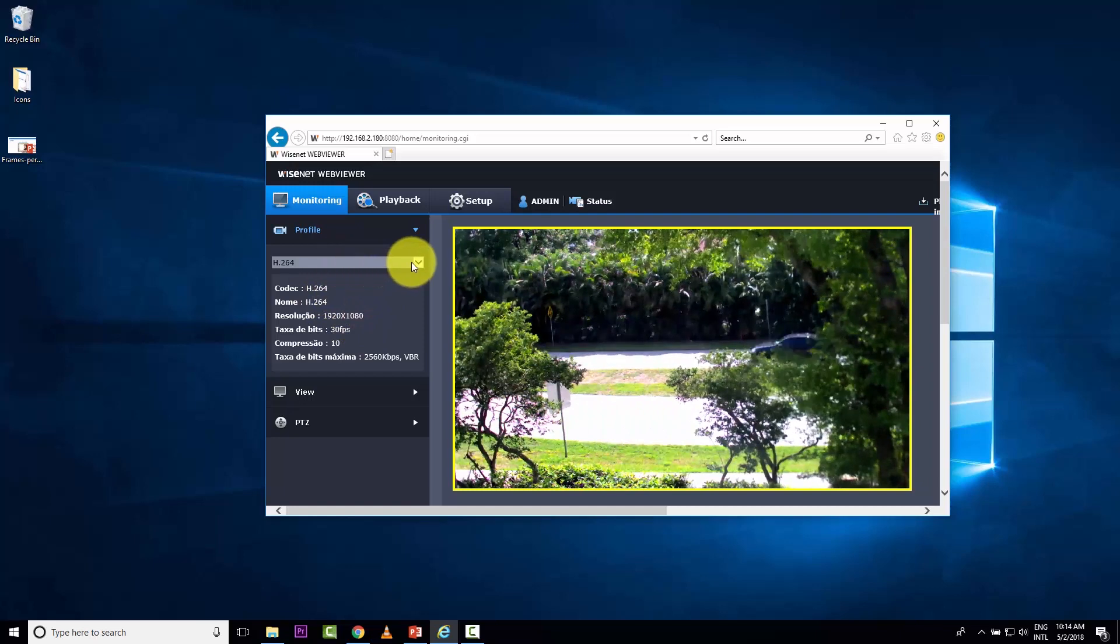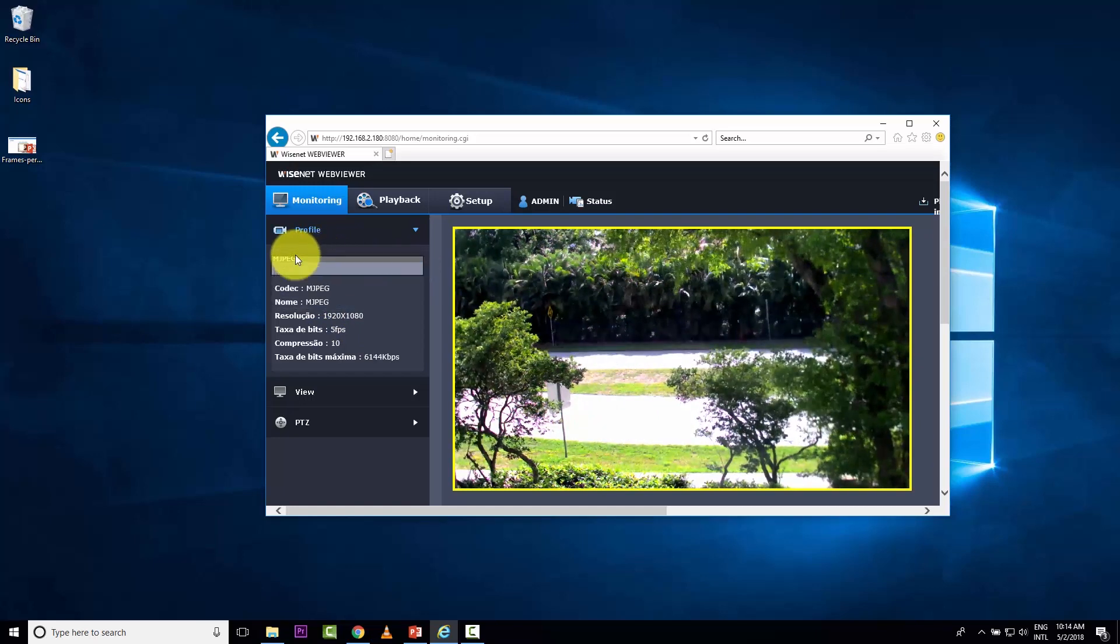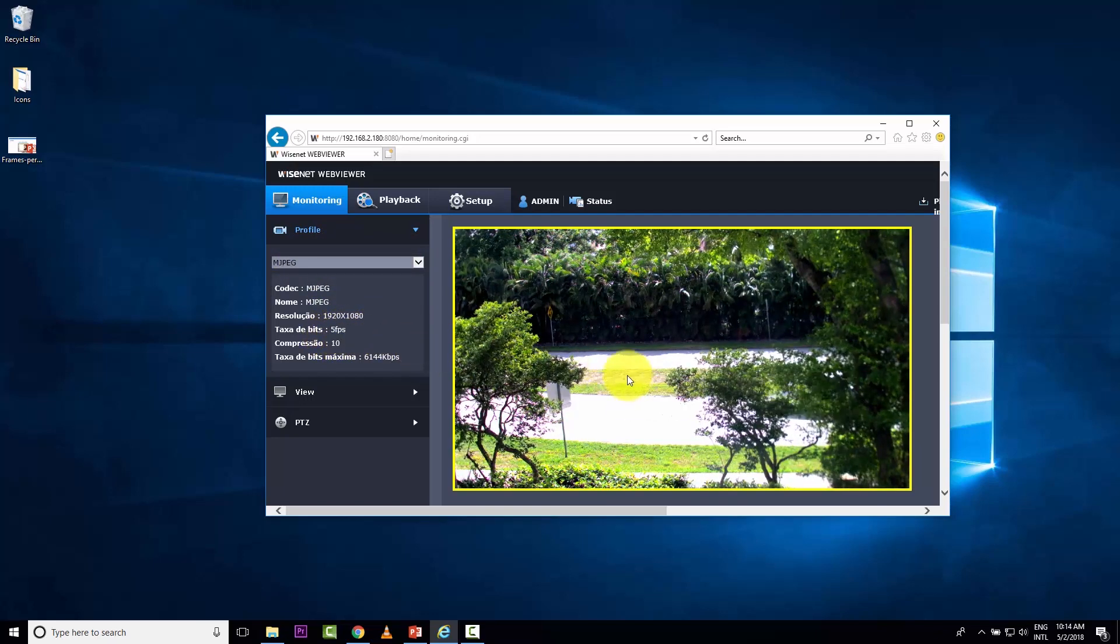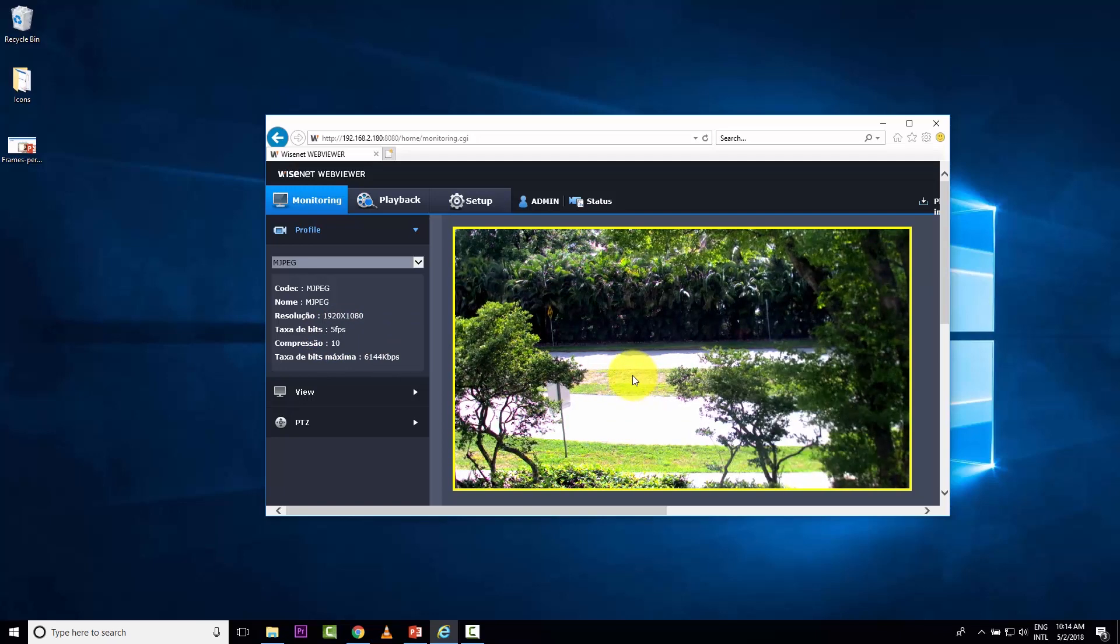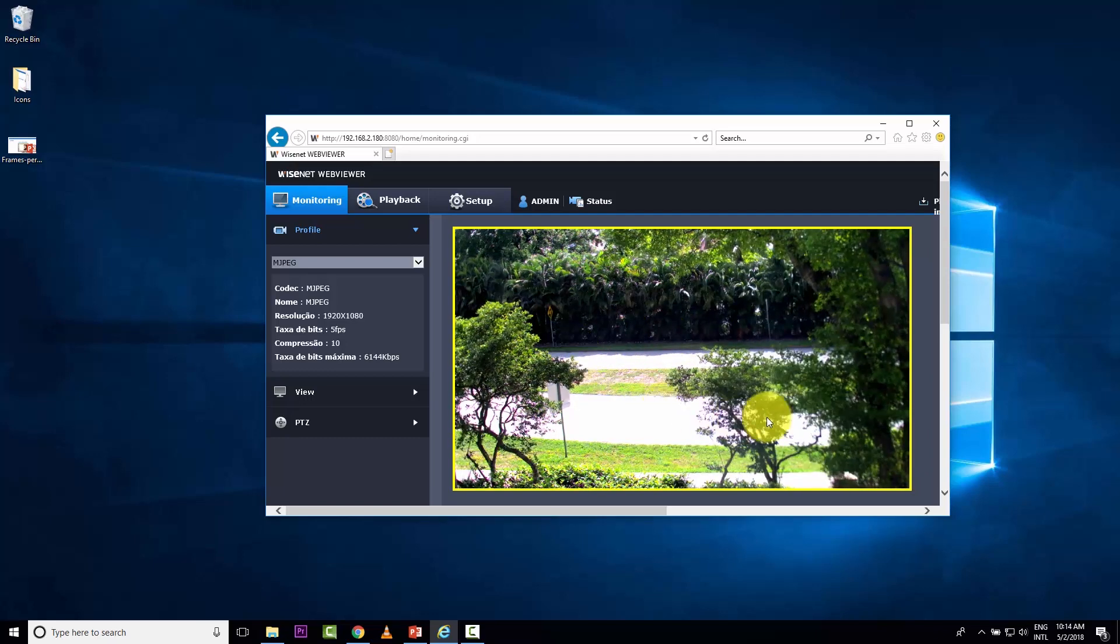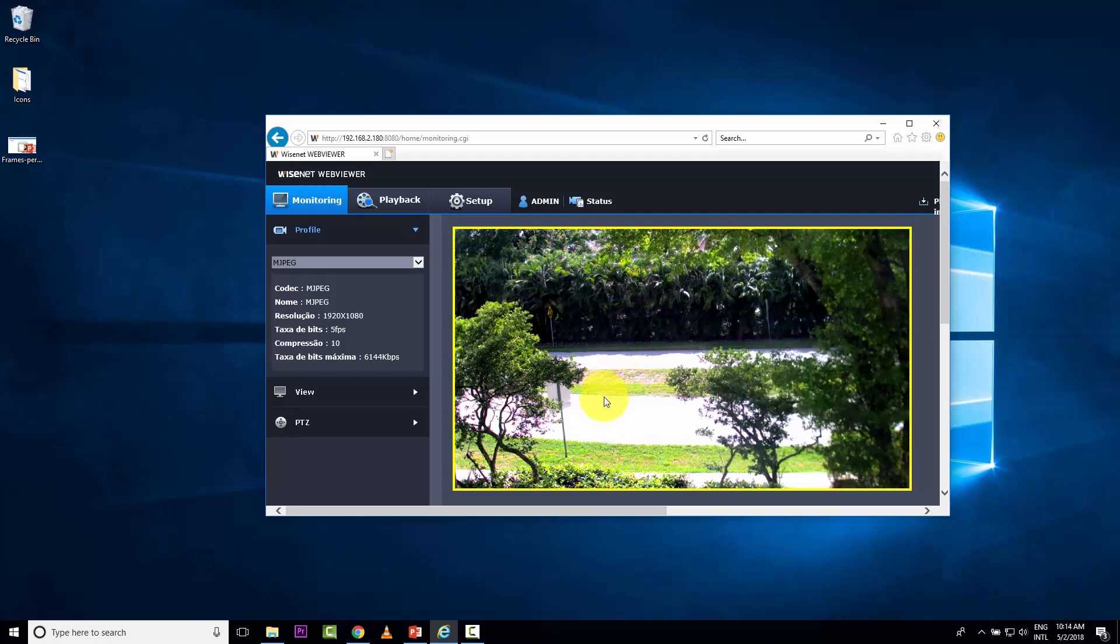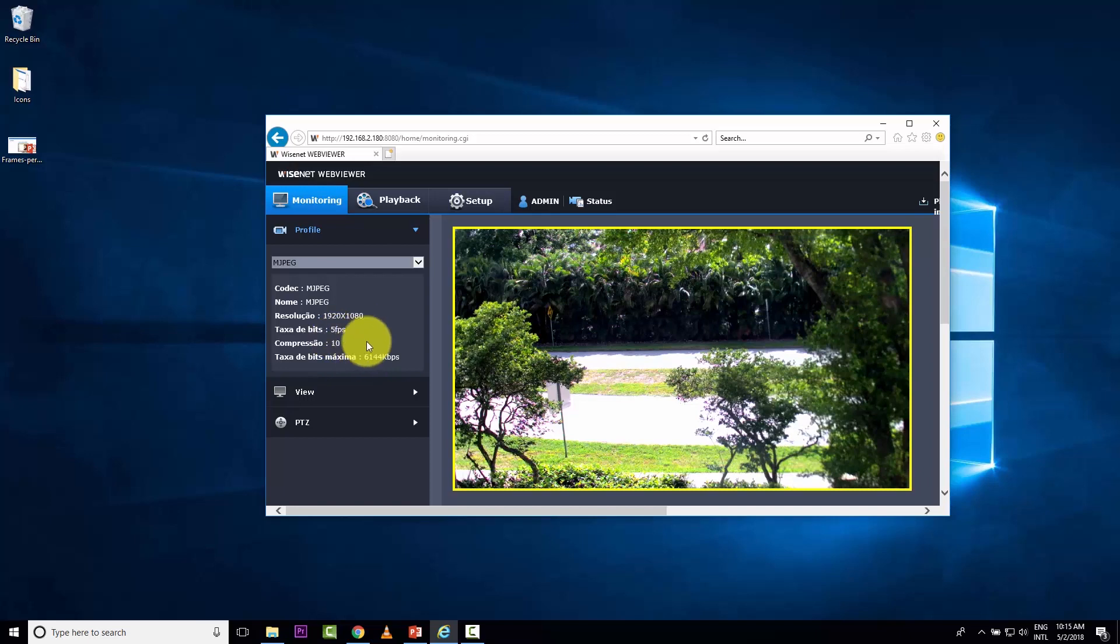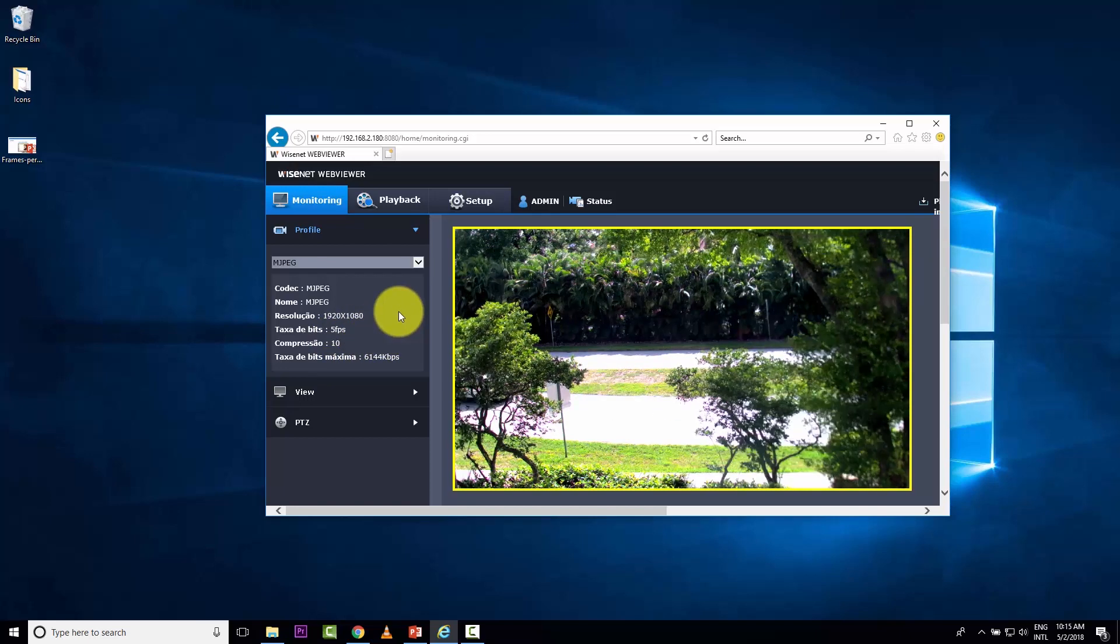If I change the profile here, let's say usually, I use the first profile with MJPEG. And now the camera is using only five frames per second. And you can see the movement here. The frame jumps from one frame to the next frame, you have a jump. And you can see even in the trees here, the movement is not that fluid. You don't have fluid motion here, because of the frame rate the camera is using right now. Be careful with that when you're designing your CCTV project.